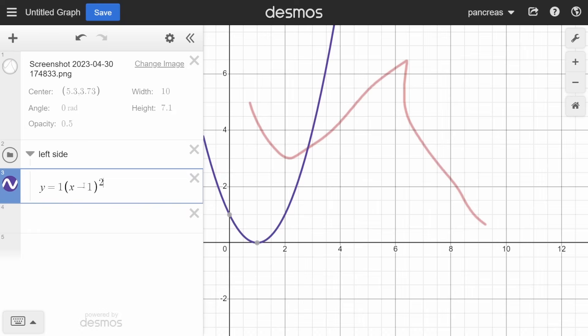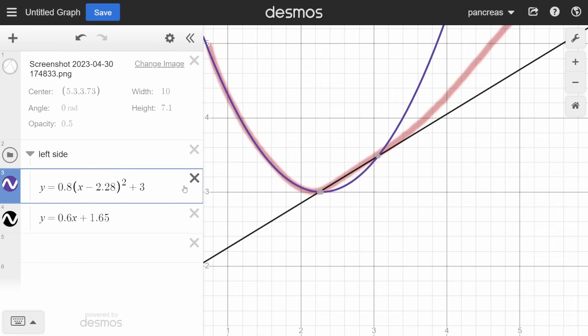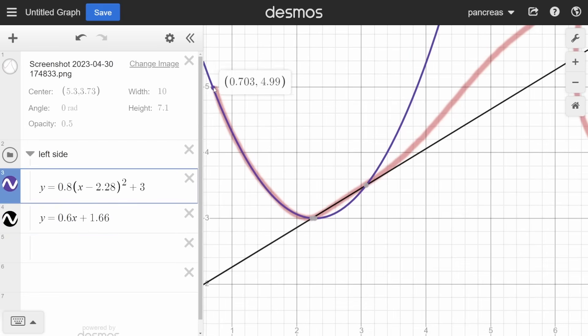Starting from the left side, the line resembles a quadratic function, so I'm going to create a quadratic function and edit the values for a, h, and k till it is the best fitting curve. Next we move on to this section of the line which looks straight, meaning we can use a linear function. Now these two functions are overlapping, so we set the domain of both functions so they end when they meet.